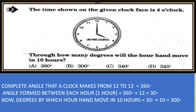The angle formed between each hour: since there are 12 parts in the clock, the full angle divided by 12 equals 30 degrees. So the angle between each hour is 30 degrees. The degrees by which the hour hand moves in 10 hours is 30 degrees × 10 = 300 degrees.